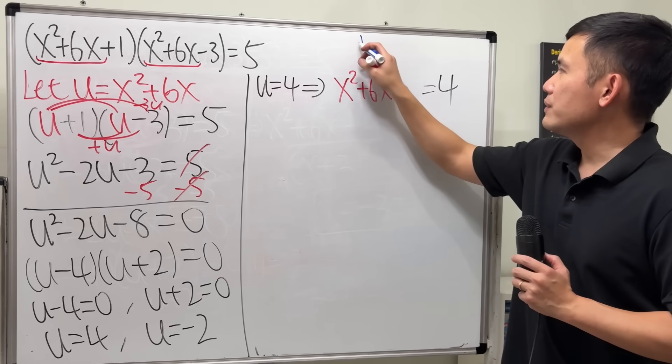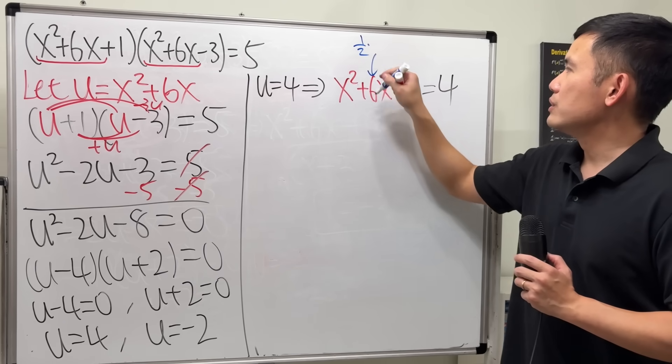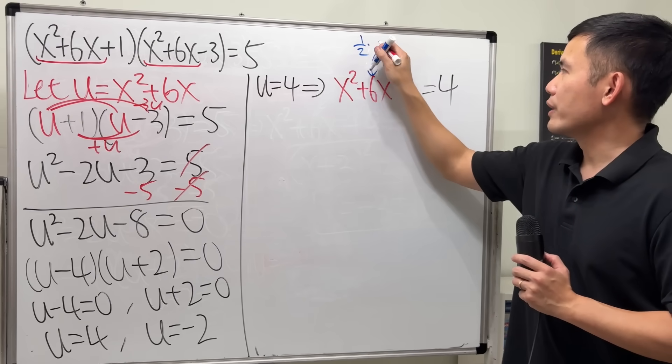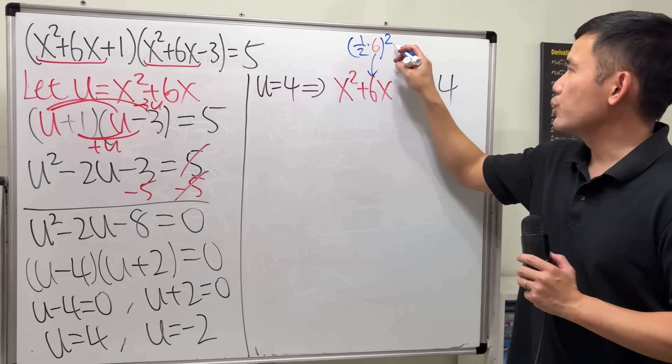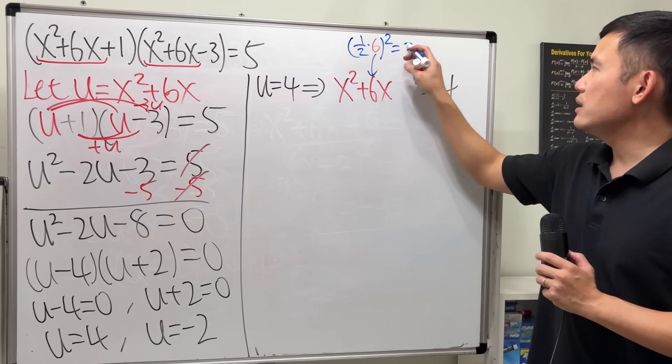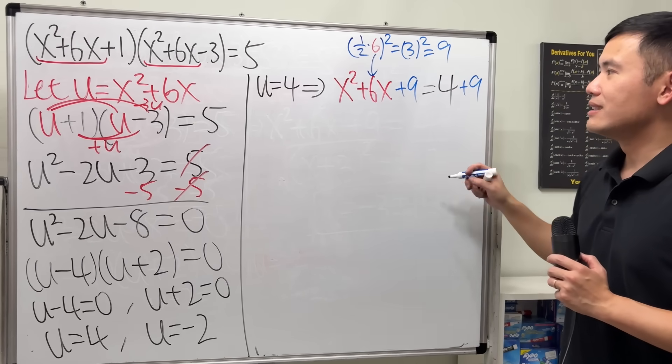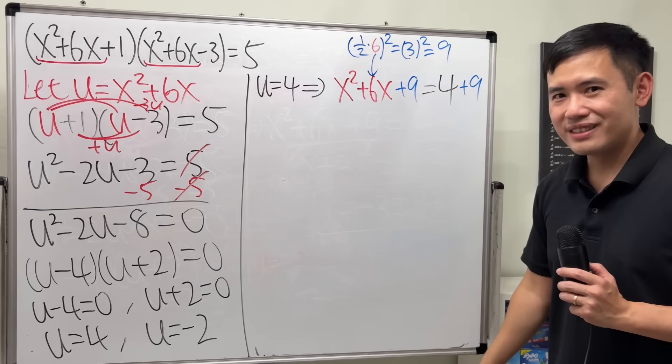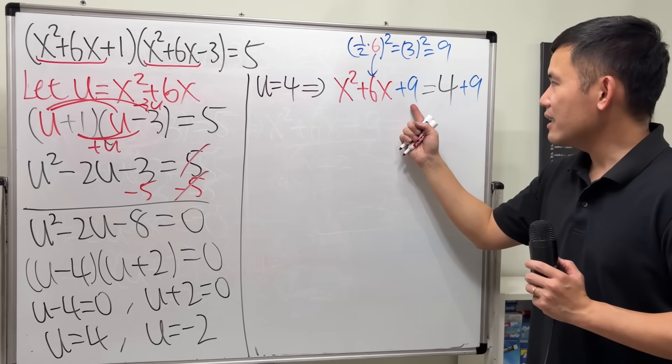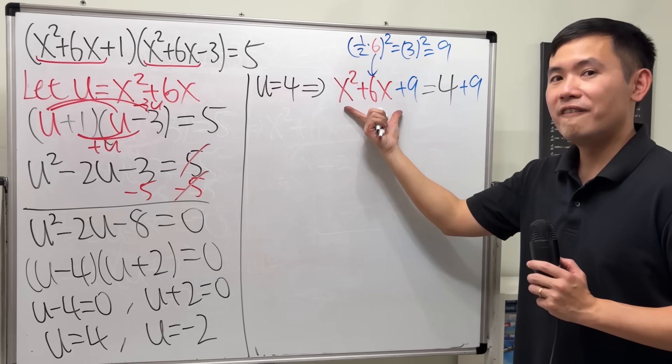Look at the coefficient of this, which is 6, multiply with 1 half. Square that, half of 6 is 3, square that, we get 9. So, add the 9 to both sides. I call the 9 the magic number. Because the 9, in this case, will make this factorable.